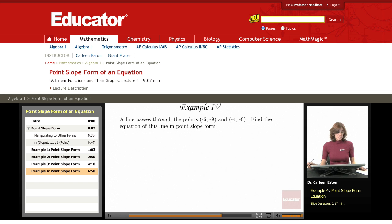A line passes through the points (-6, -9) and (-4, -8). Find the equation of this line in point-slope form.